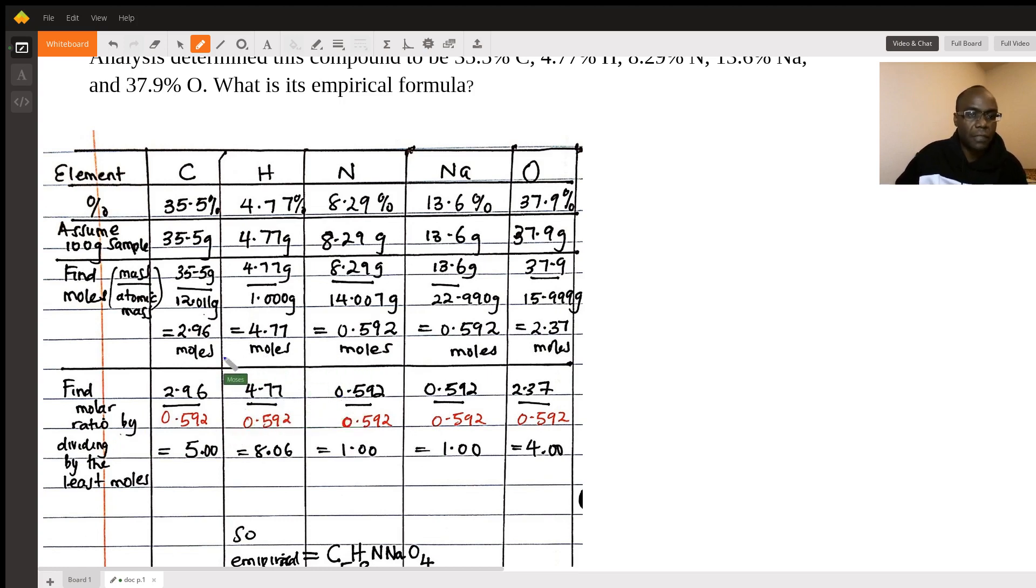To do that, you look at your answers for your moles and you divide each and every one of those answers by the least value of the answer. So in this case, you look across the least number value I get in terms of moles is 0.592. So I'll divide all these answers by 0.592. That will help me to get whole numbers.